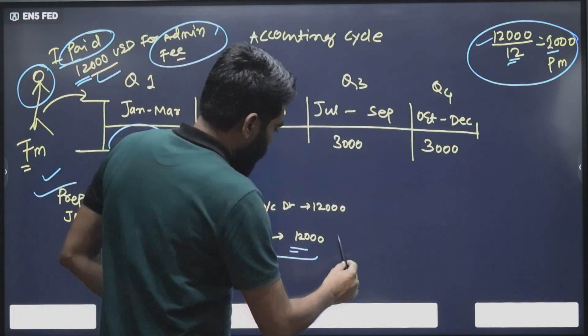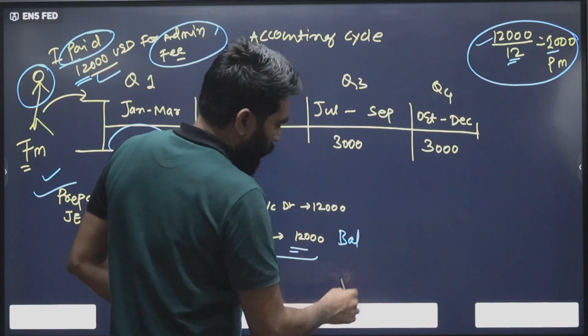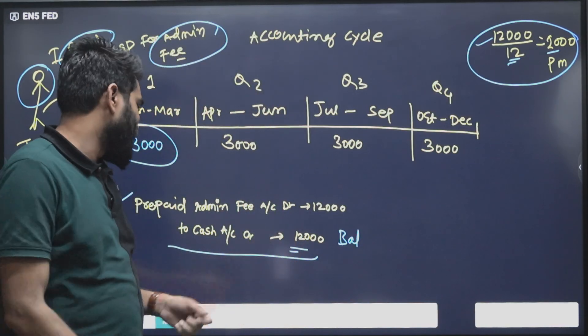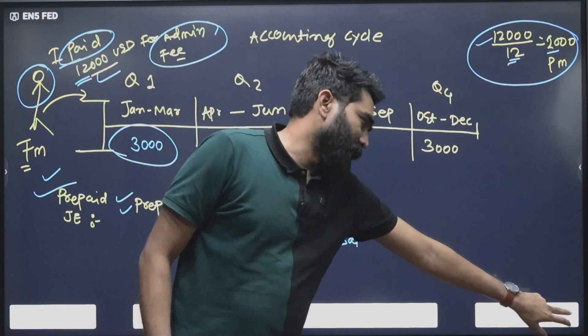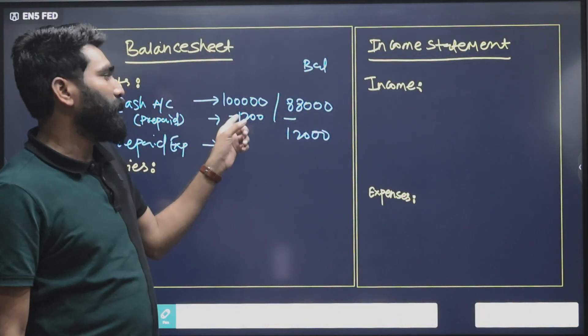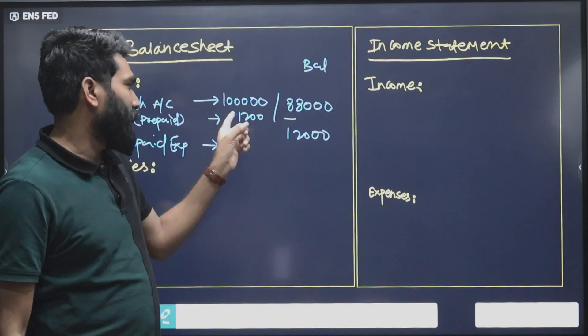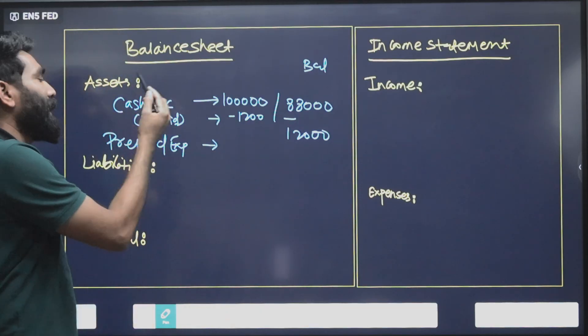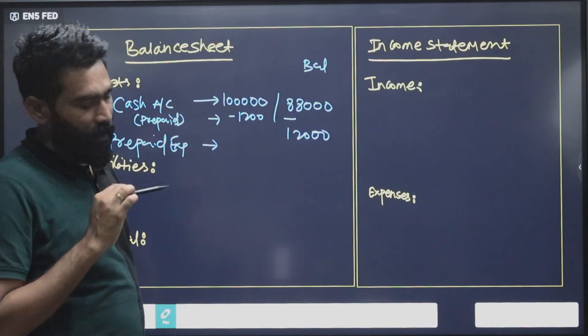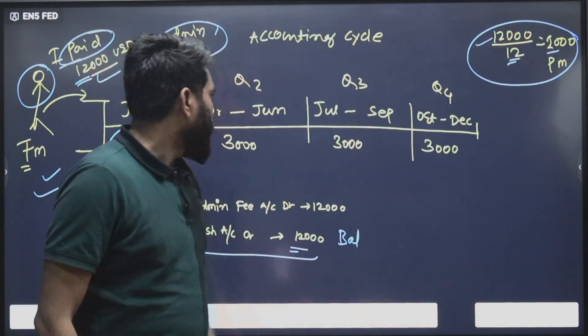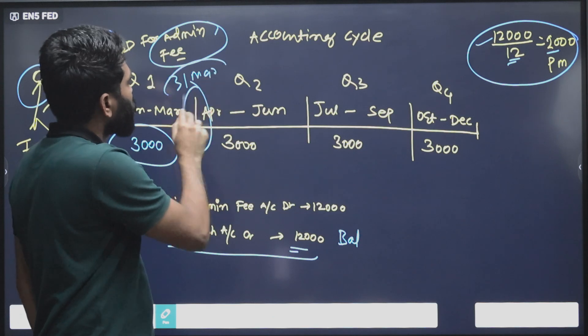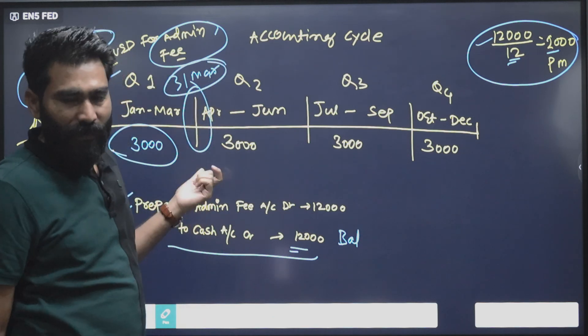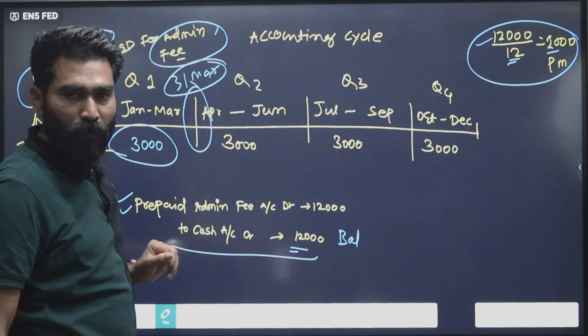The cash debit side - it's a balance sheet, the impact would be on the balance sheet. Then prepaid admin fee, we also treat as current assets of the business. Since it's current assets, we record it on the asset side only.